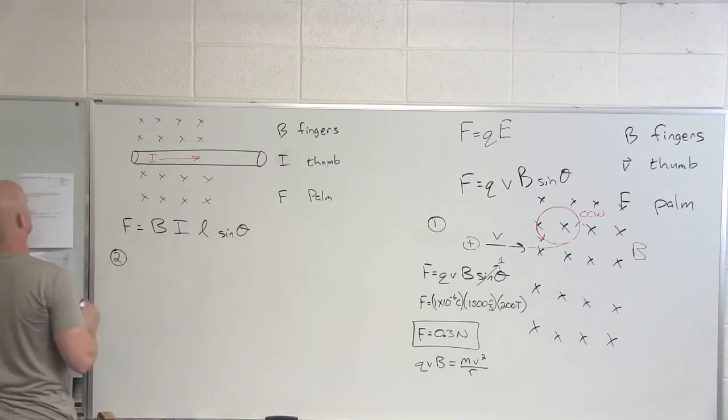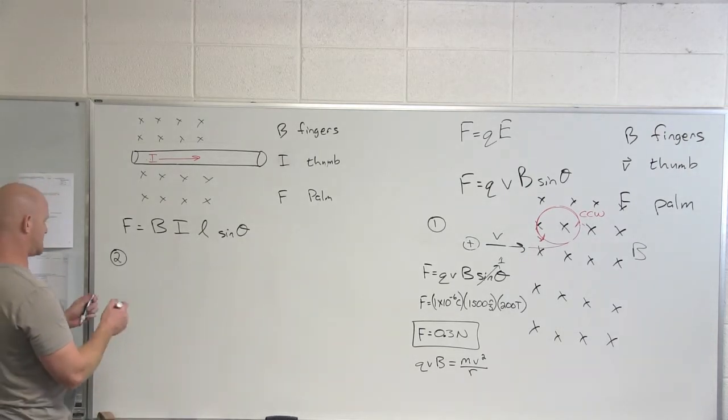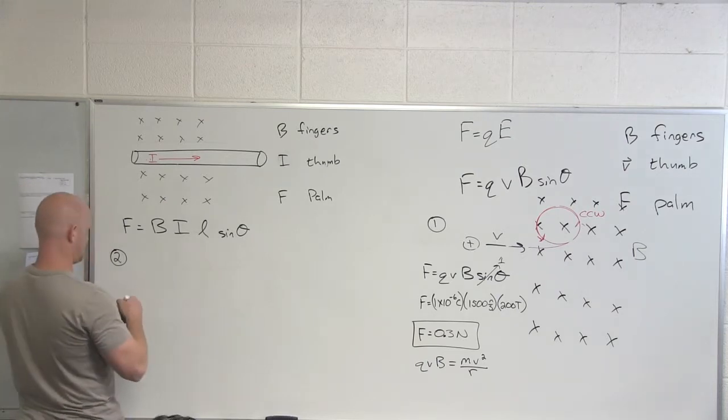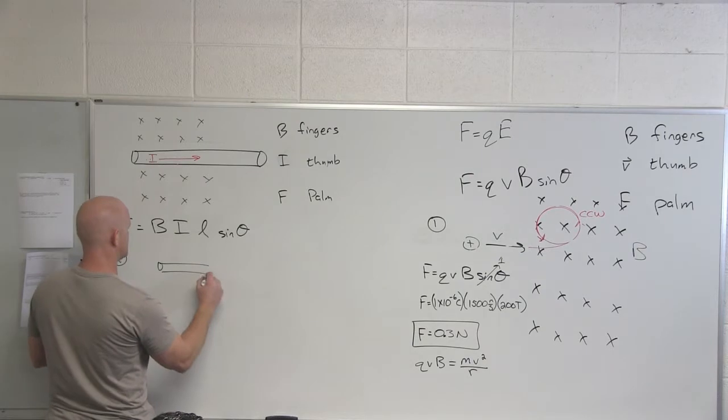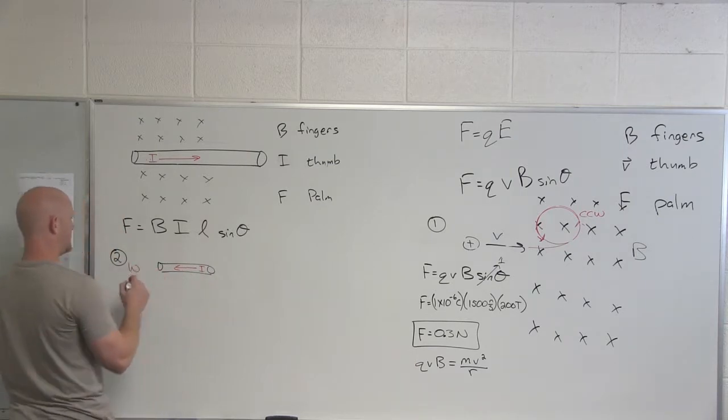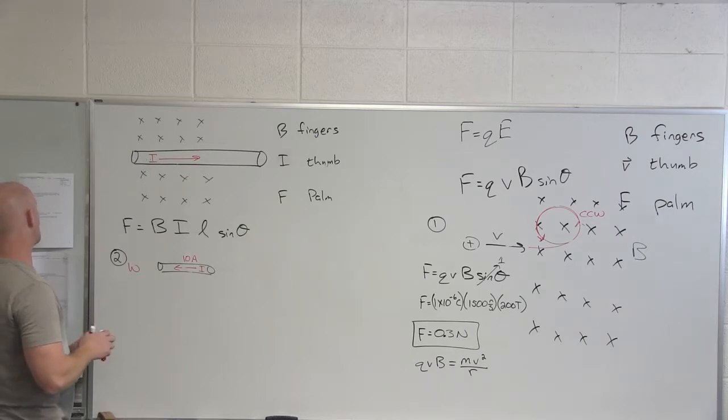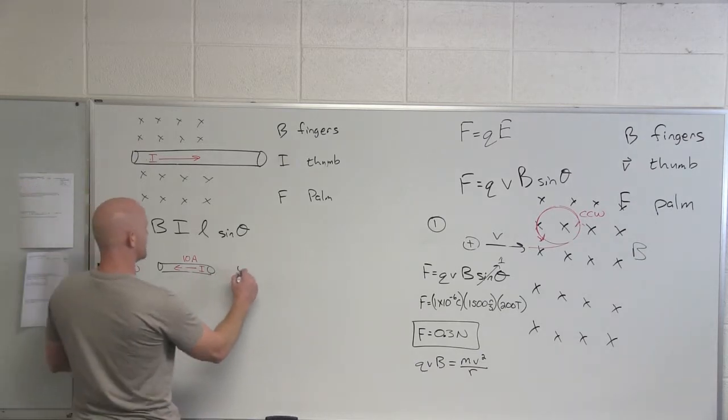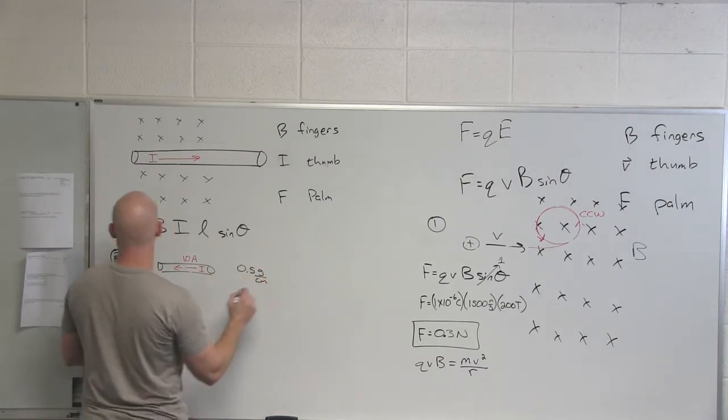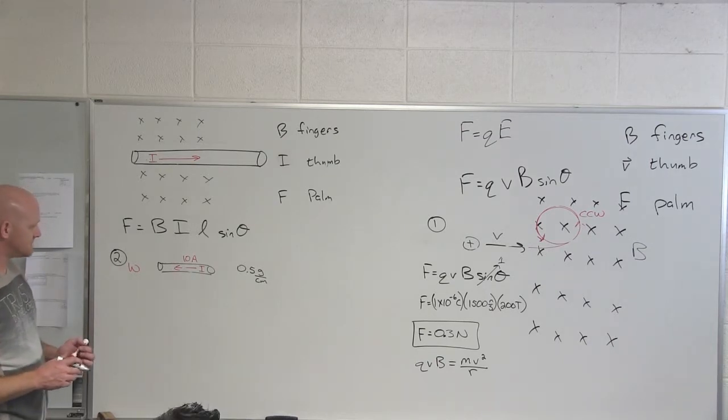Cool. So let's look at question number two. Question number two says, A wire with 10 amps of current, so directed west horizontally. So in this case, we'll call this west. With a linear mass density, this is going to be fun, of 0.5 grams per centimeter. It's suspended vertically in the air due to the presence of a magnetic field. Exactly what we were just talking about. So what is the magnitude and direction of the magnetic field?